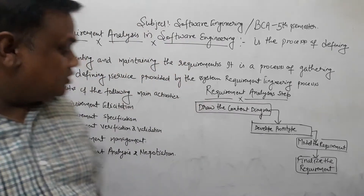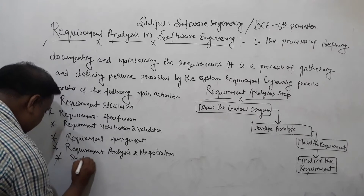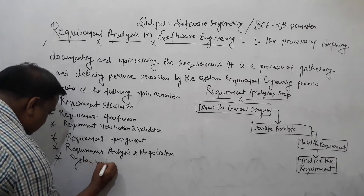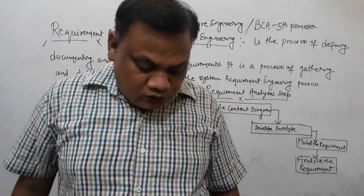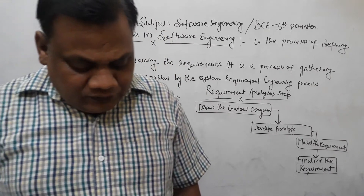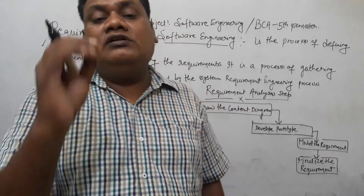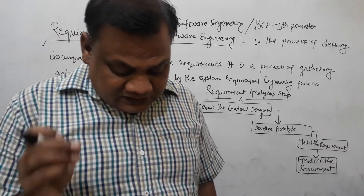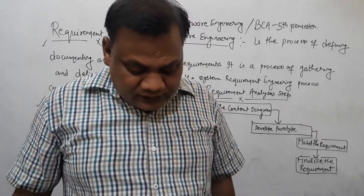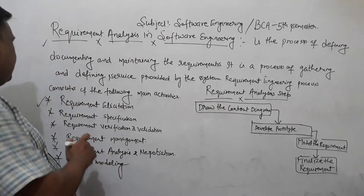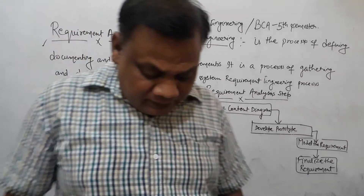The next step is System Modeling. In system modeling, to fully specify what is needed, we build a meaningful model of the application. This meaningful model is built in this step to represent the system requirements clearly.